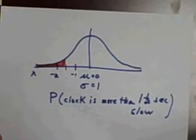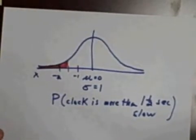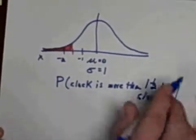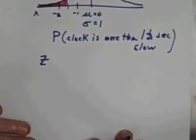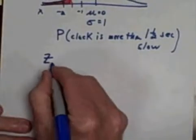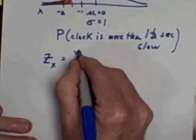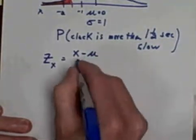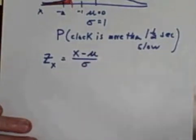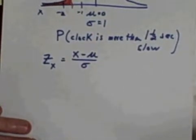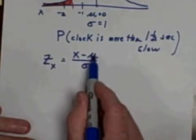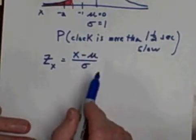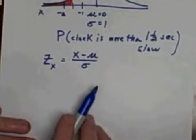We need to convert my x value to a z-score — we've studied z-scores earlier, so let's go over it again. To find a z-score for an x value in general, we take the x value, subtract mu (the mean), and divide by the standard deviation. For the standard normal distribution, mu is zero so we're not subtracting anything, and the standard deviation is one so dividing by one doesn't change it either.